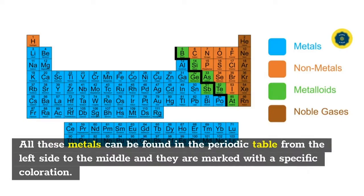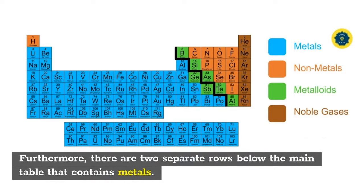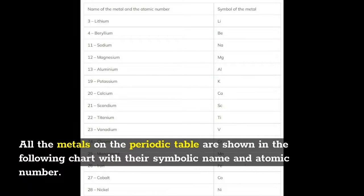All these metals can be found in the periodic table from the left side to the middle, and they are marked with a specific coloration. Furthermore, there are two separate rows below the main table that contain metals. All the metals on the periodic table are shown in the following chart with their symbolic name and atomic number.